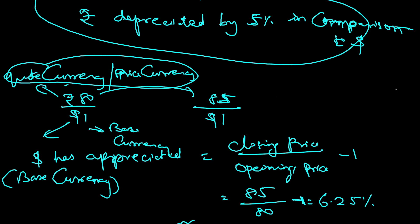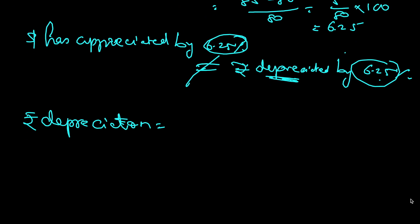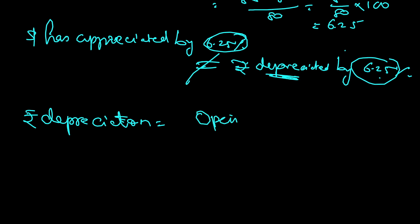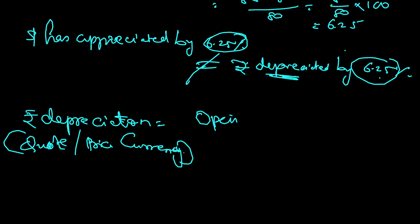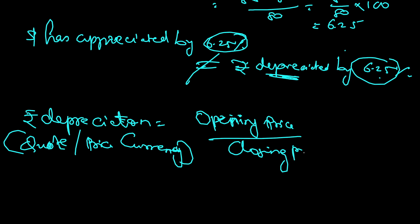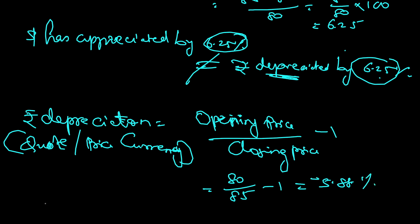To calculate appreciation or depreciation for the price currency, the formula is: opening price divided by closing price, minus 1 — it is the other way around. So opening price 80 divided by closing price 85, minus 1, comes to 5.88 percent. So rupee has depreciated by 5.88 percent.